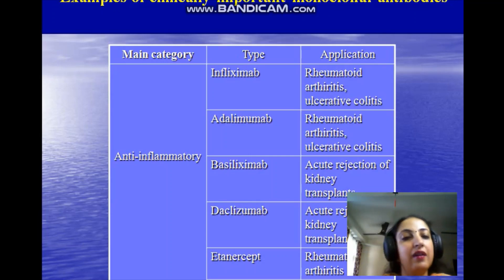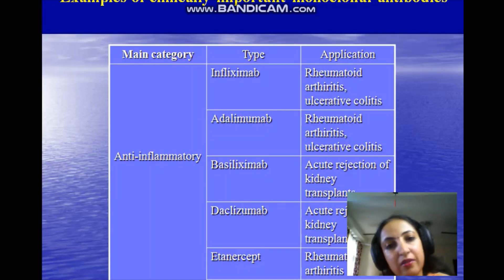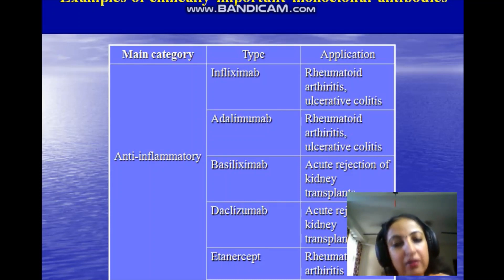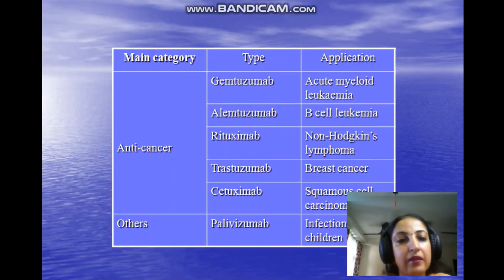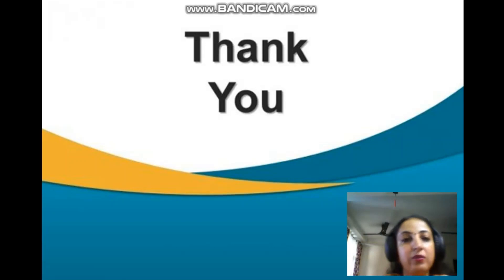These are the various approved MAbs mentioned previously, which are now being marketed for various diseases. Several MAbs are being used for anti-inflammatory diseases including rheumatoid arthritis, ulcerative colitis, kidney transplantation, and allergic asthma. They are also being used for anti-cancer and other diseases like infections in children. They already have a great role, and we hope they will also have a significant role in COVID-19, for which trials have already begun. Thank you so much friends — stay home, stay safe.